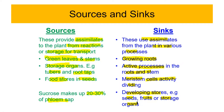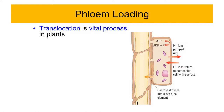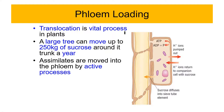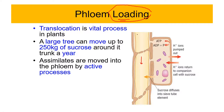Another important concept is phloem loading and unloading. Sucrose from the site of production or source end has to be loaded into the phloem, and then transported to different parts of the plant. The process of sucrose entering the phloem is called phloem loading. When sucrose reaches its destination — say, the root — and exits the phloem, that is called phloem unloading.